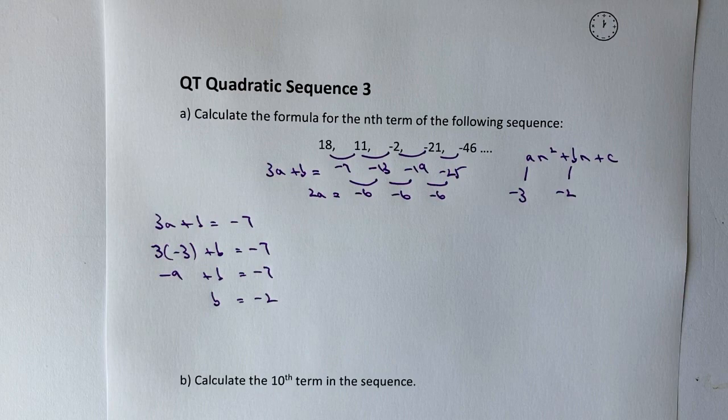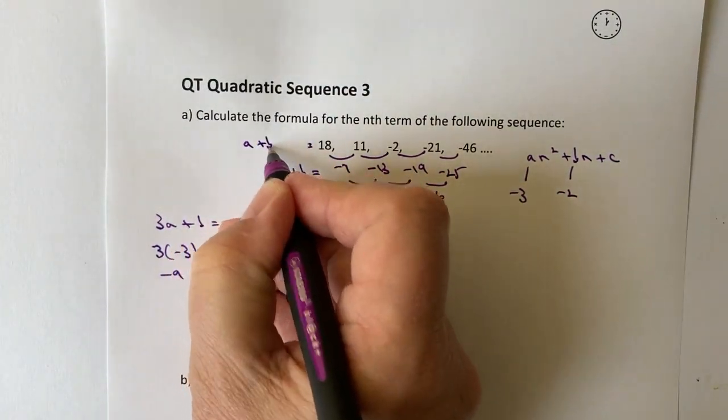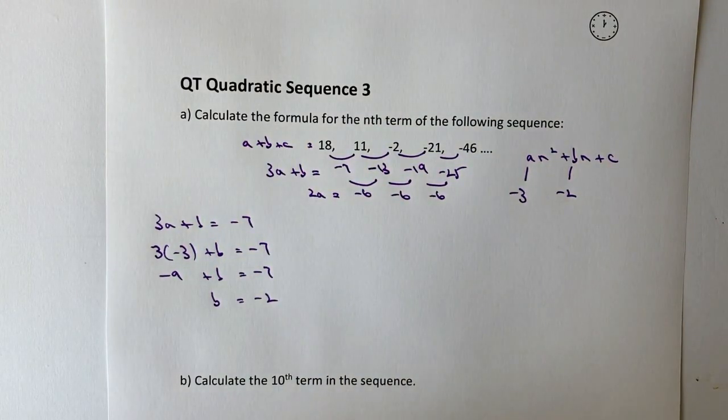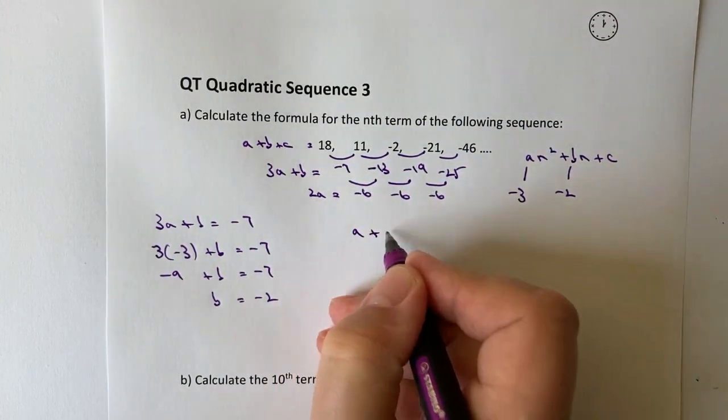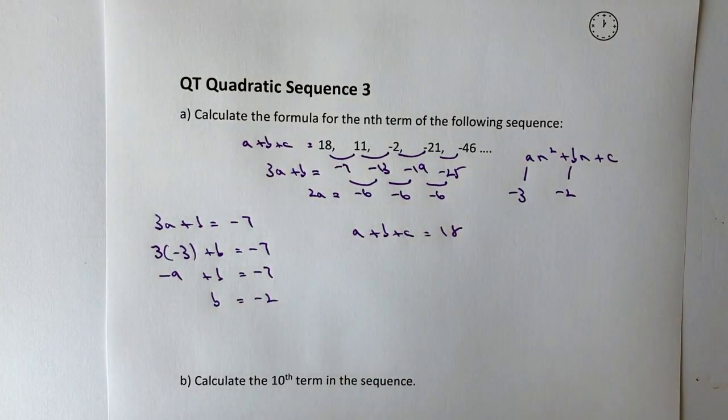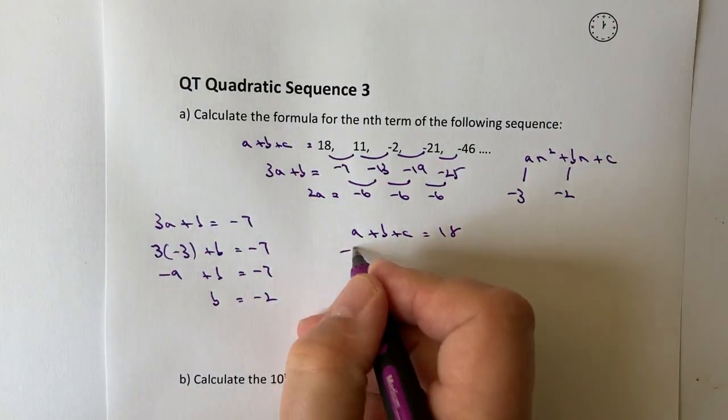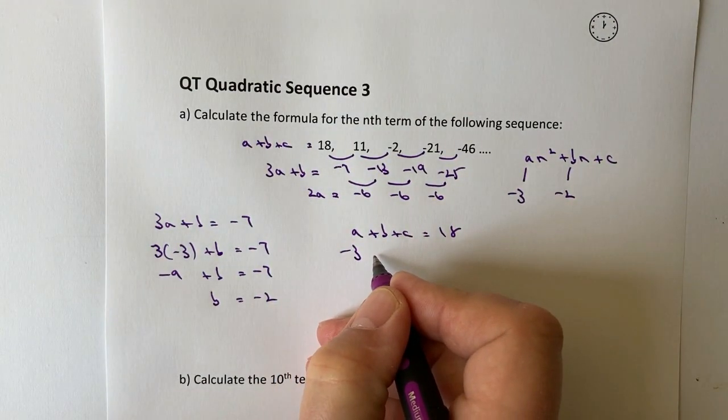Then the final part of this is this top number is the equivalent to a plus b plus c. So I can write a plus b plus c equals 18. So I've got my value of a, which is going to be minus 3.